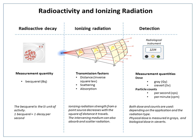The Becquerel is the SI-derived unit of radioactivity. One Becquerel is defined as the activity of a quantity of radioactive material in which one nucleus decays per second. The Becquerel is therefore equivalent to an inverse second, s⁻¹.